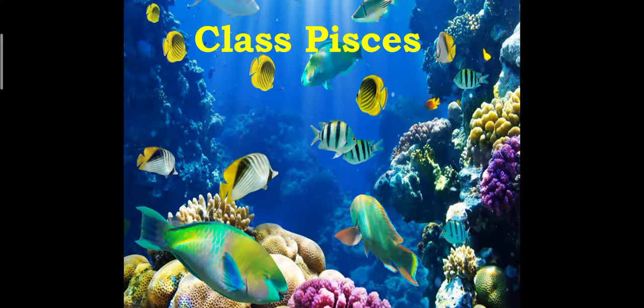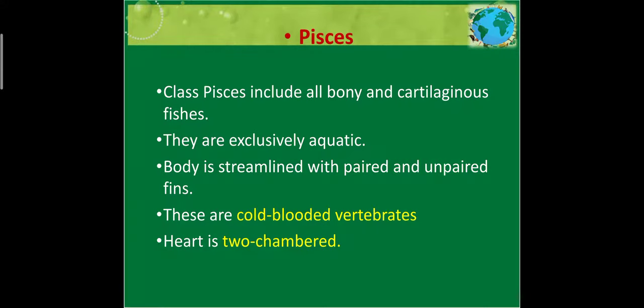Now coming to the classes. The very first class of Vertebrata is Pisces. As the name suggests, Pisces includes all the bony and cartilaginous fishes. There are two types: one with a well-developed bony structure, and one with cartilage. The best example for cartilaginous fish is shark, and bony fish examples are katla, rohu and many others.